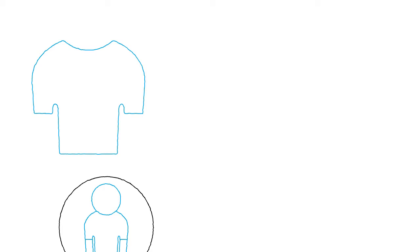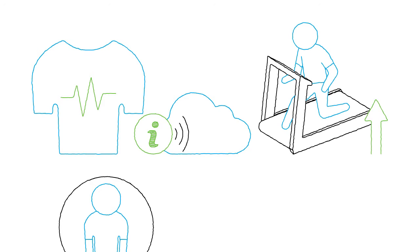Pavel's t-shirt monitors his heart rate and energy output and sends this data to the cloud, helping Pavel improve his fitness routine.